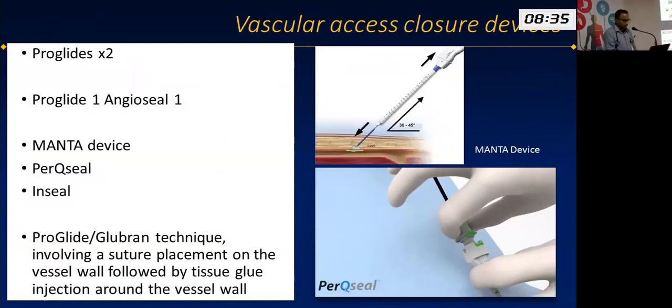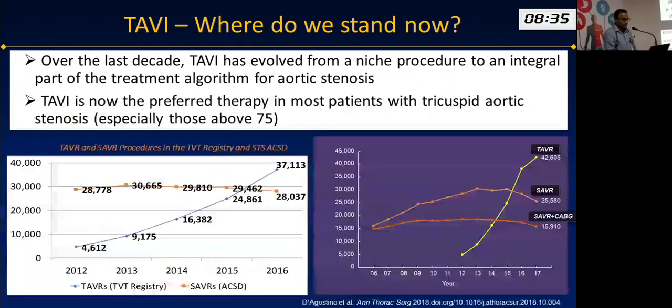For vascular access closure we have several technologies including Proglide suture-based closure, making this an entirely percutaneous procedure.